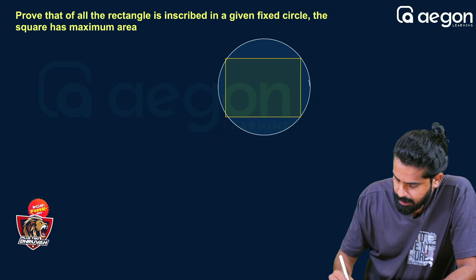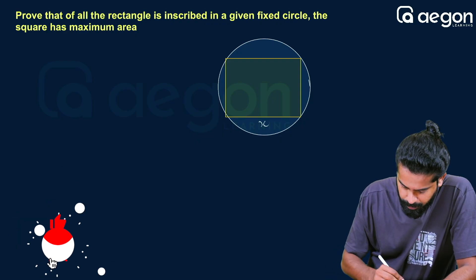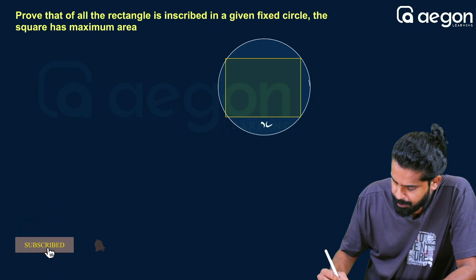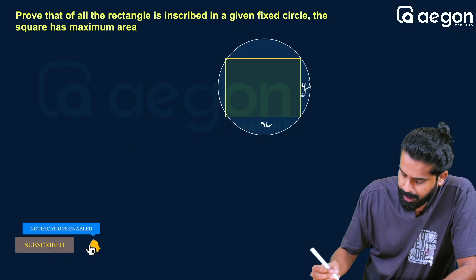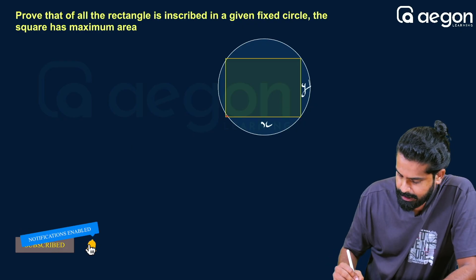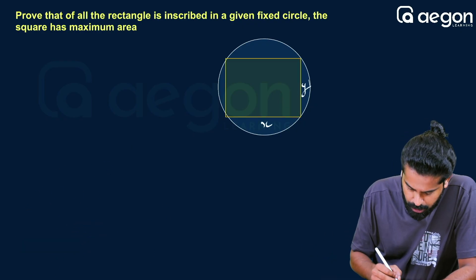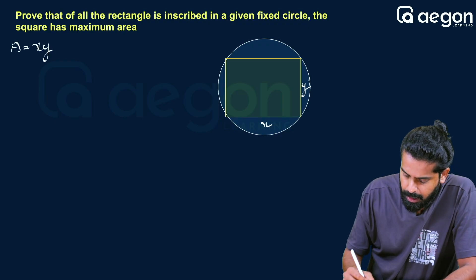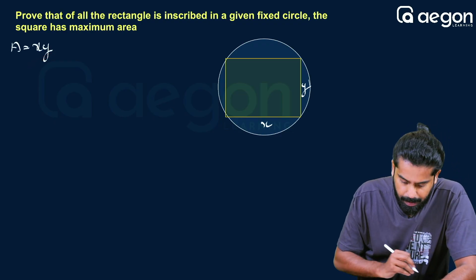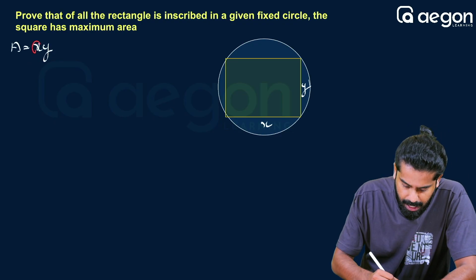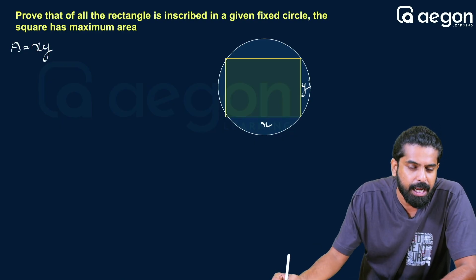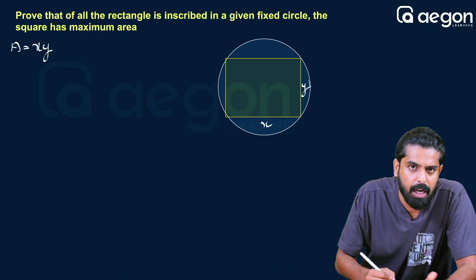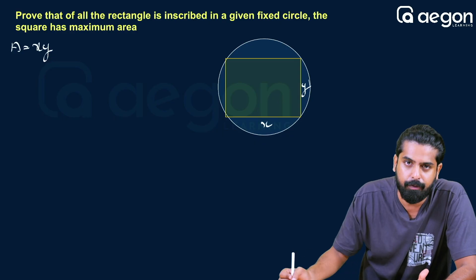This length is x and this breadth is y. So this is x and this is y. If we look at the area, it is x multiplied by y. We will differentiate with respect to x. But here we have two variables, so we need to differentiate with respect to x. There might be a relation we can use.